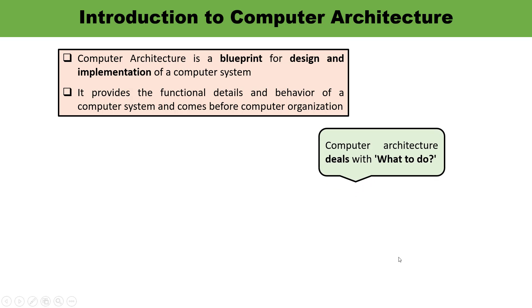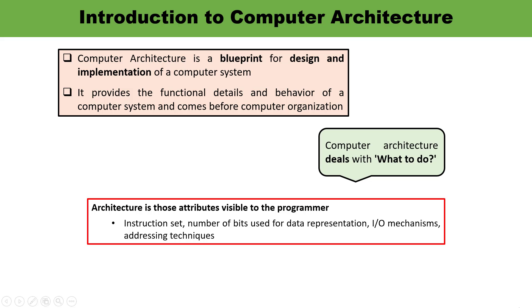Computer architecture deals with what to do — it thinks about what is to be done related to design and implementation. Architecture is related to attributes and qualities which are visible to the programmer. When talking about attributes available to programmers, there must be some instruction set, number of bits used to represent data, how the data is being represented, input-output mechanism, ports, and what kind of addressing mode is being used. These are all the parameters or attributes related to architecture.